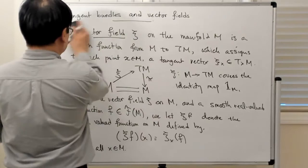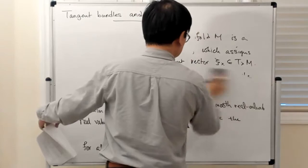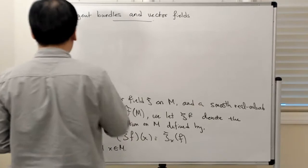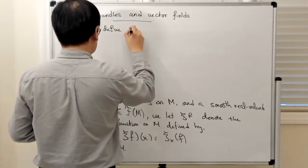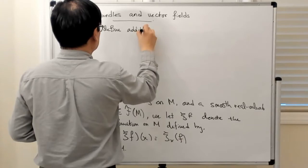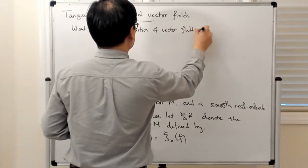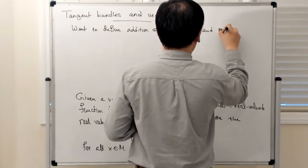The same way that we talked about having a linear space structure on tangent spaces, you can extend that to a linear space structure on vector fields. So let's see how you do that — we want to define addition and multiplication by scalar functions.